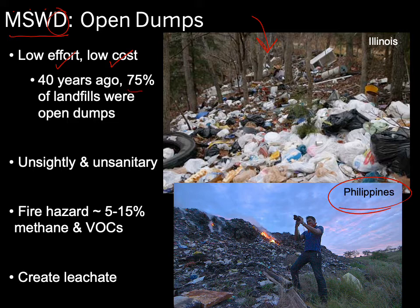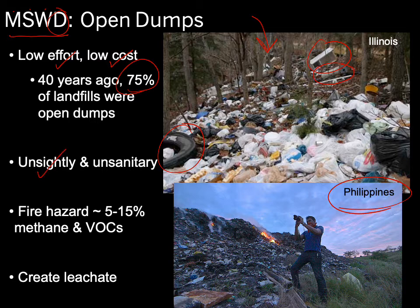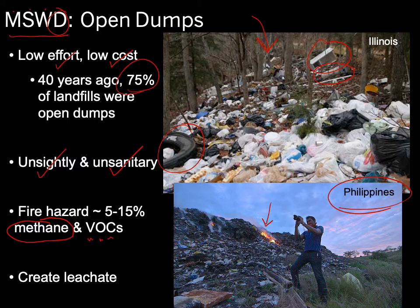Open dumps are easy and low cost, but the problems are significant. They are very unsightly and extremely unsanitary — critters move in and everything leaches out. Plastics, vinyls, and materials made of volatile organic compounds break down over time in UV light, giving off gases — some of which, like methane, are flammable. This creates a huge fire hazard. If an open dump catches fire, you have a major problem.